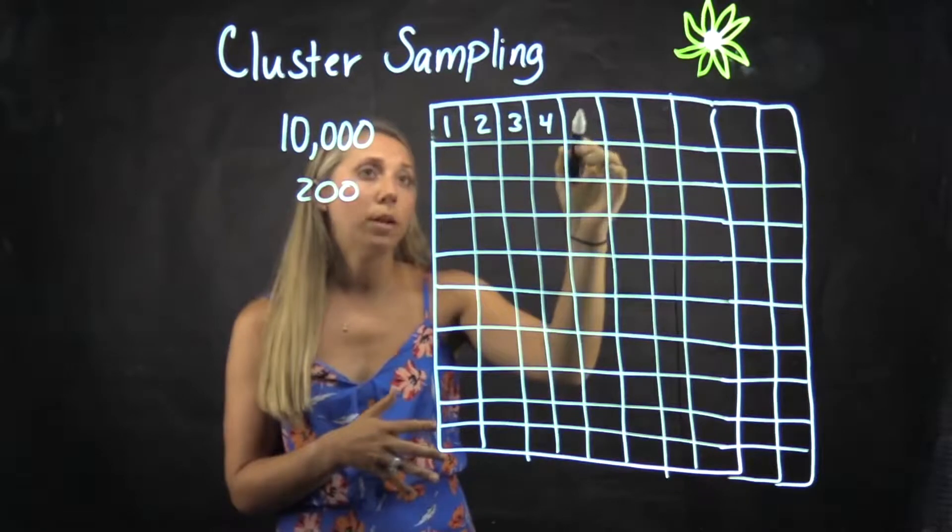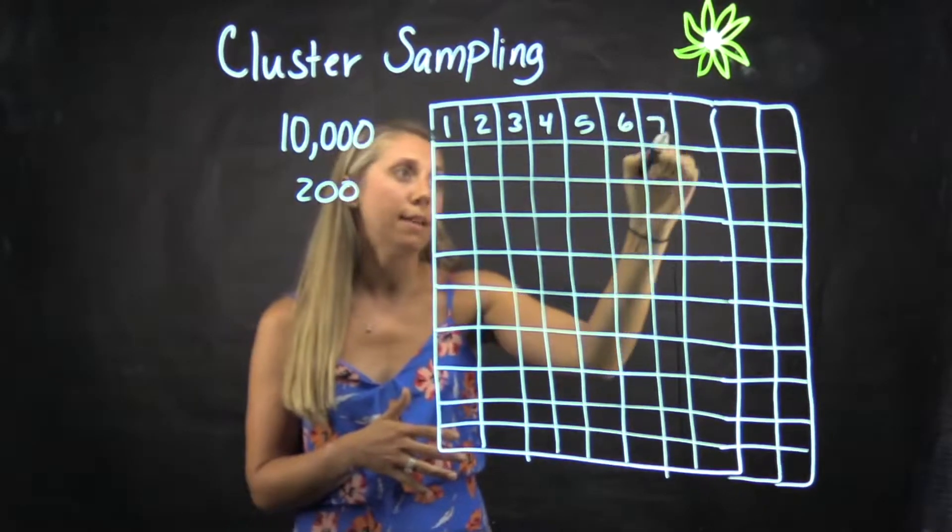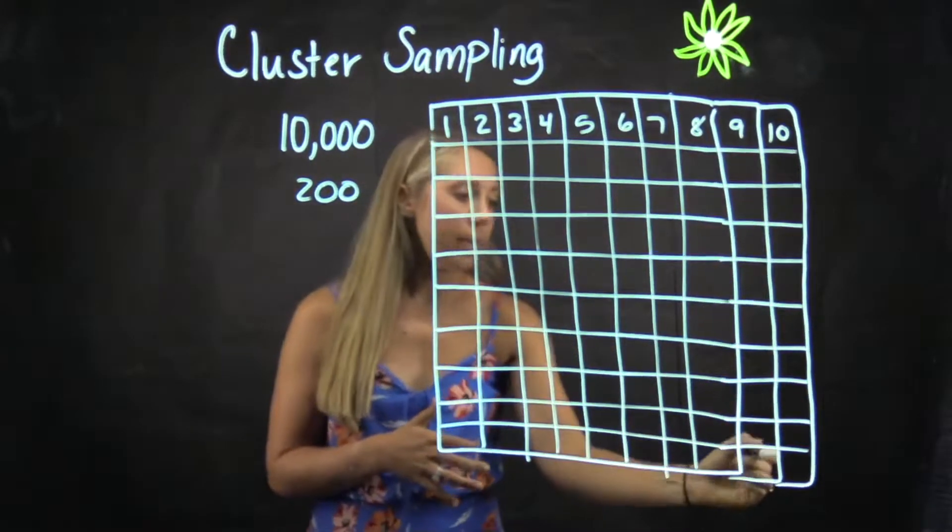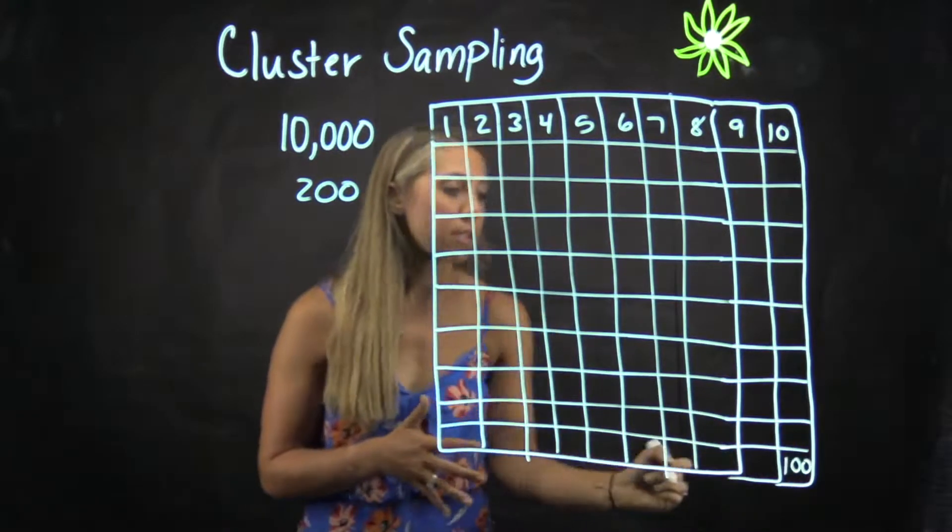So I'm going to start numbering on 1, 2, 3, 4, 5, 6, 7, 8, 9, 10, all the way down to our last cluster, which is cluster 100.